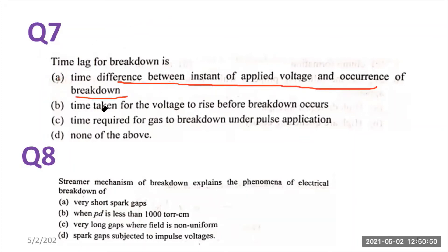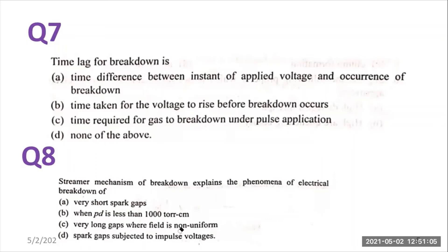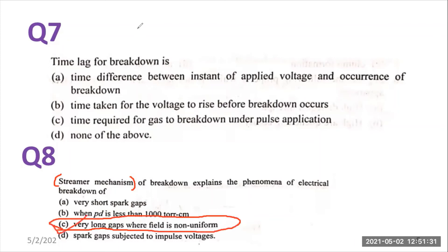Let us discuss question number eight: the streamer mechanism of breakdown explains the phenomenon of electrical breakdown of — very short spark gaps when pd is less than 1000 Torr·cm, very long gaps where the field is non-uniform, sparse gaps subjected to inverse voltage? Actually, the streamer mechanism is used when Townsend's mechanism fails. Townsend's theory is mainly applicable for uniform electric fields; for non-uniform electric fields you have to use the streamer mechanism. So option C — very long gaps with non-uniform field — is the right answer.